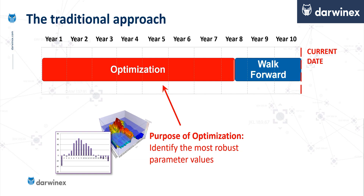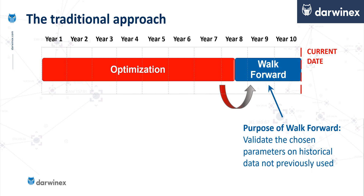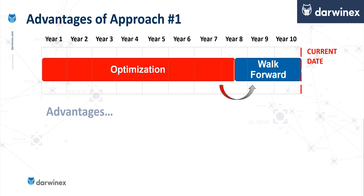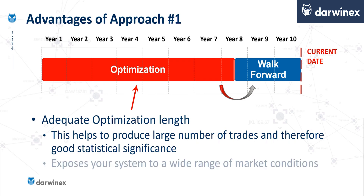Once we've obtained those optimal parameters, they're then passed forward into the walk-forward validation phase where they're validated on historical data that they've never seen before. This approach does have many advantages. For example, the optimization period can usually be quite large — my recommendation is that this should usually be approximately three times larger than your walk-forward phase, though that depends on how many parameters you're optimizing. This large period of time generally produces a large number of trades, and therefore the process has a better chance of being statistically significant.